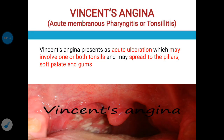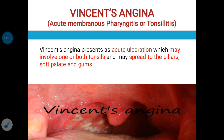The first acute infection is Vincent's angina. It is also called acute membranous pharyngitis or tonsillitis. It presents as acute ulceration and involves one or both tonsils, and may spread to the pillars, soft palate, and gums. Vincent's angina is also called trench mouth.